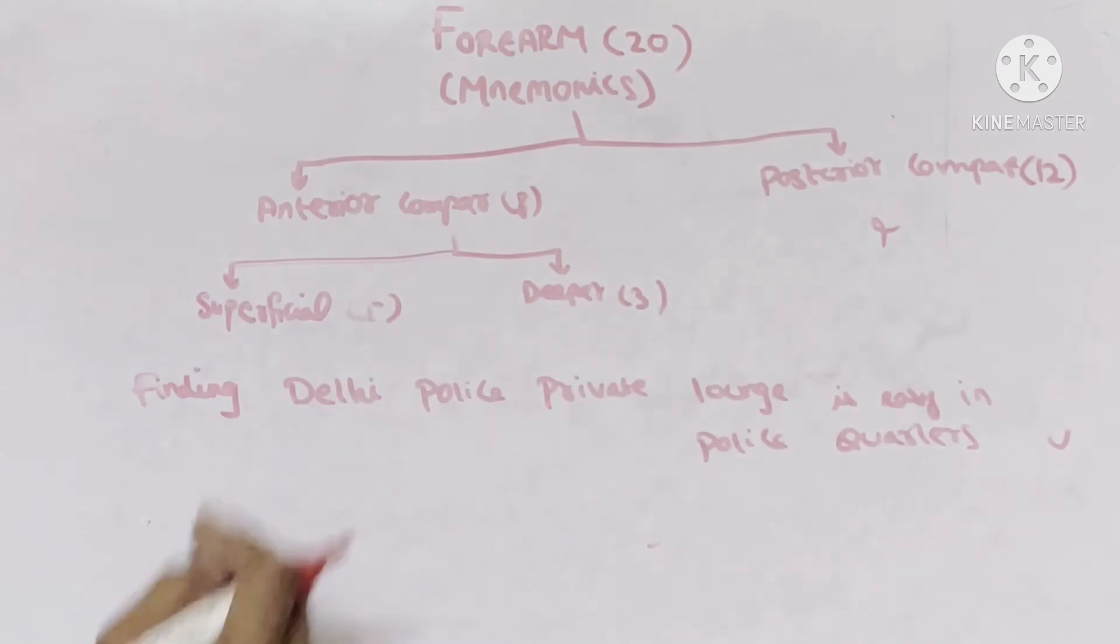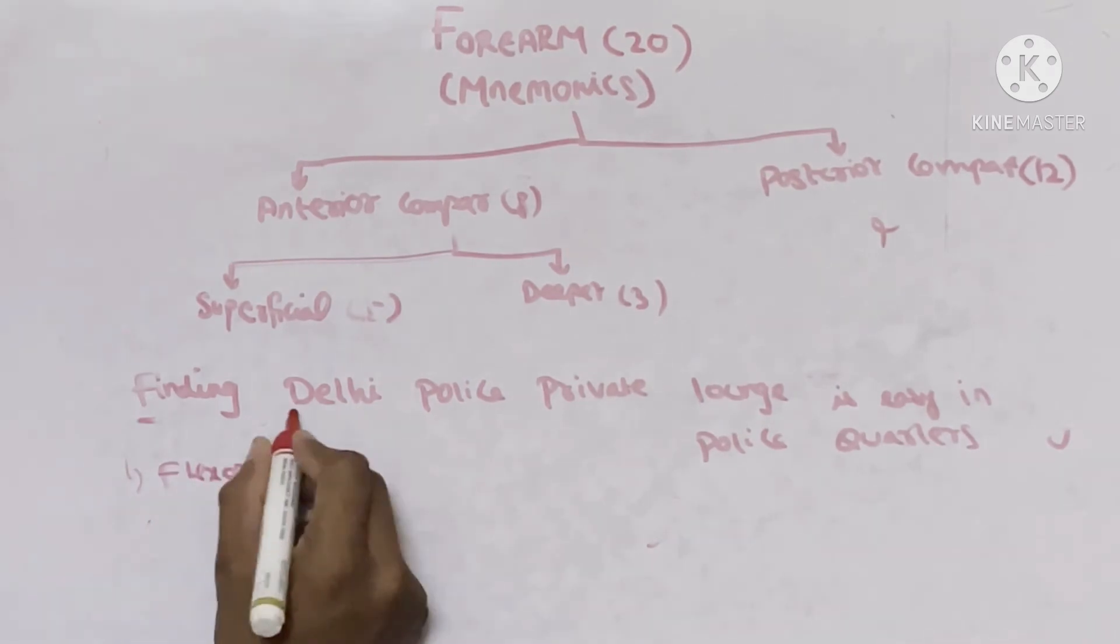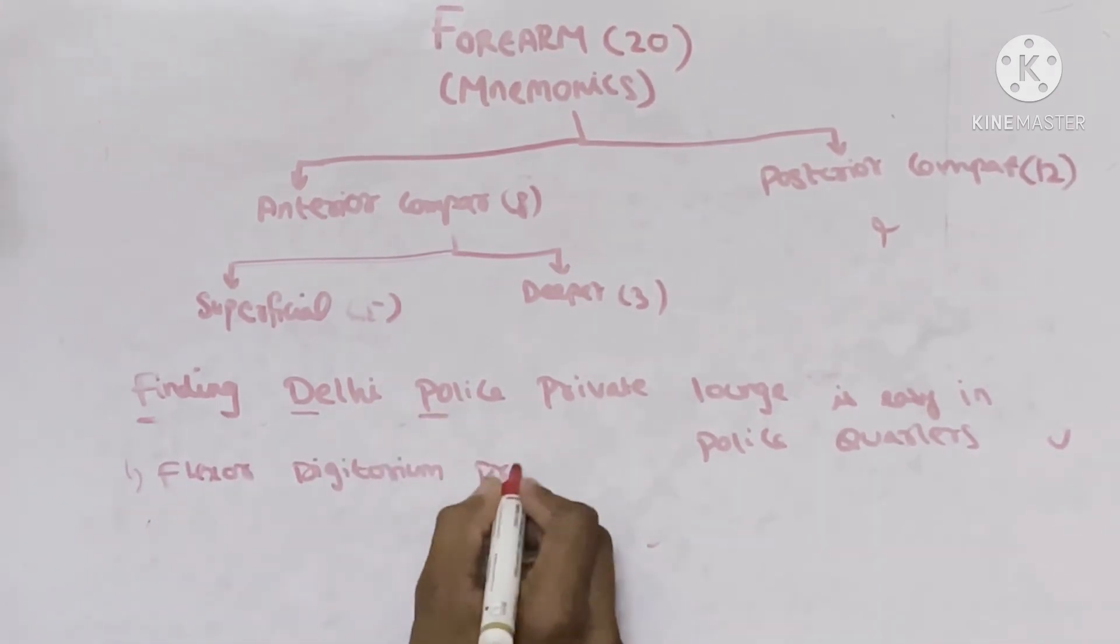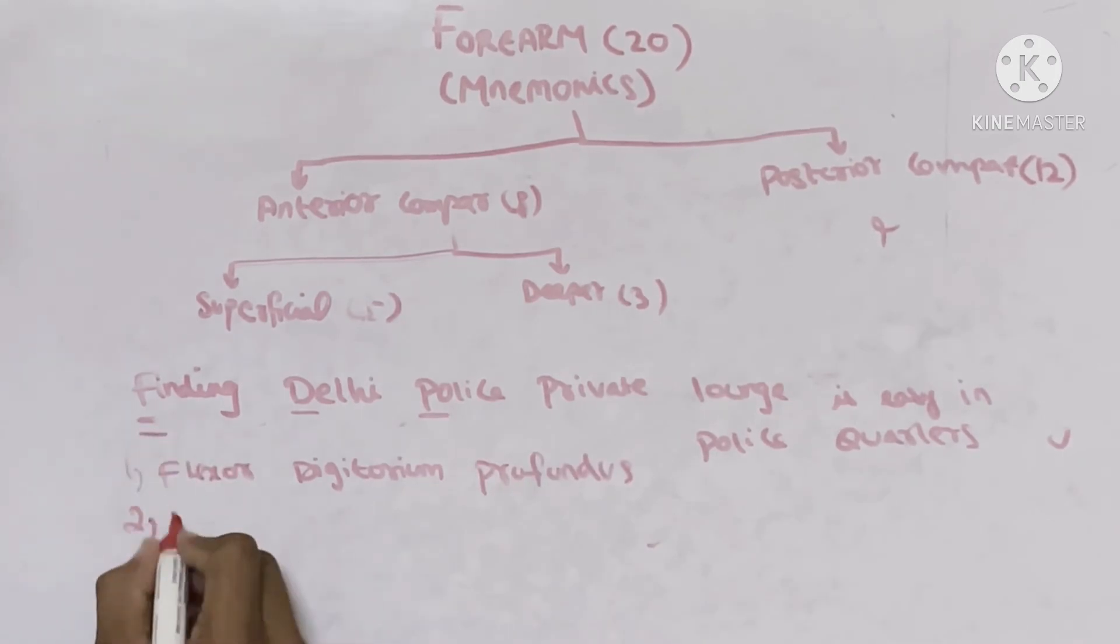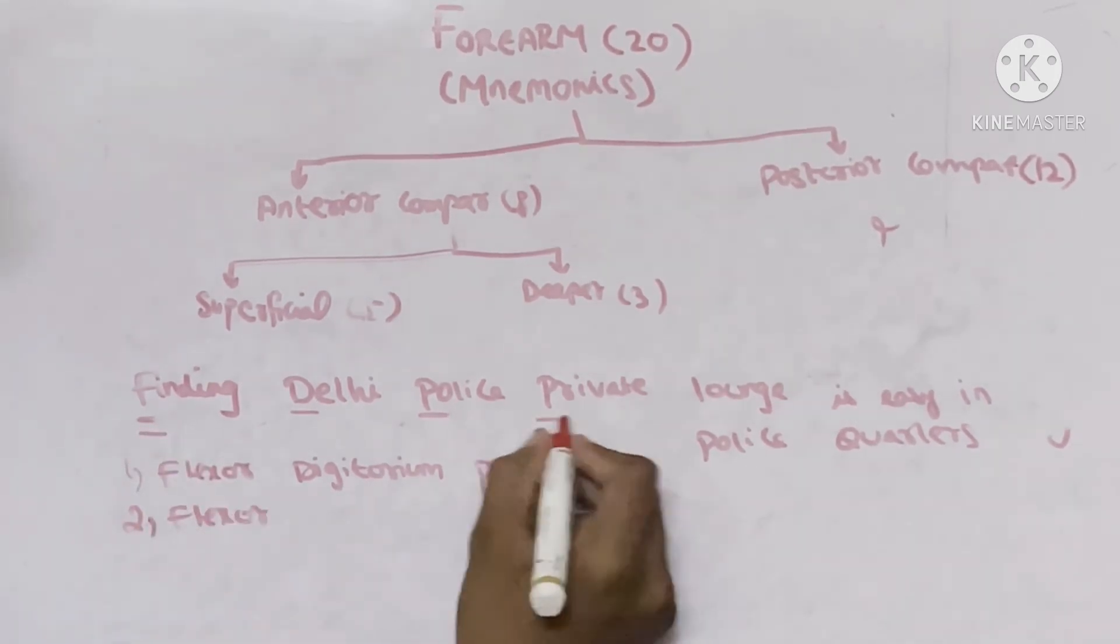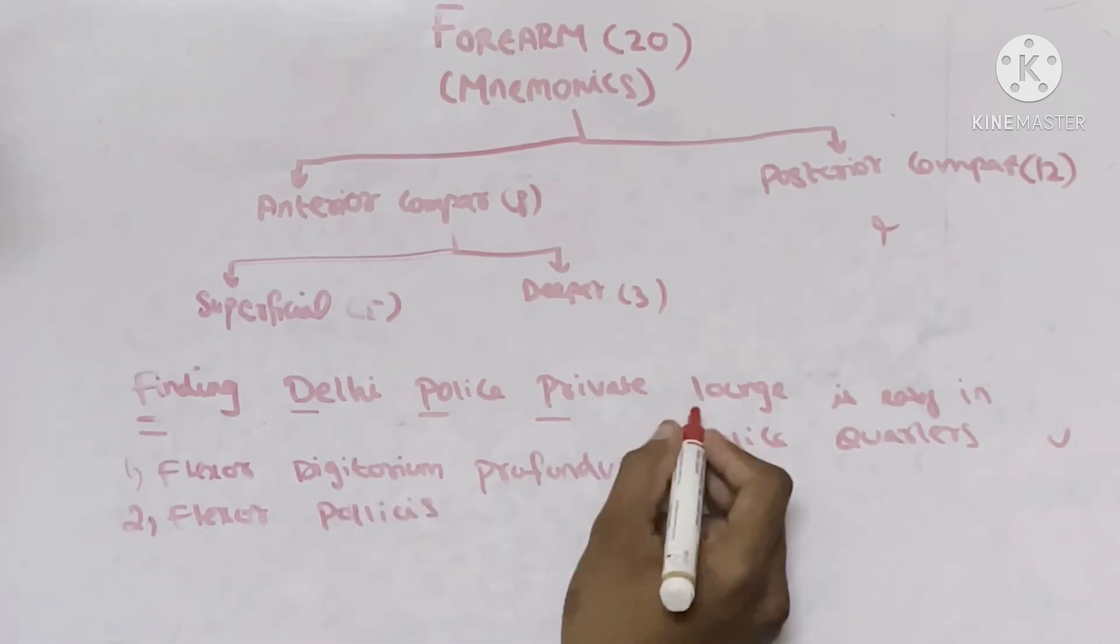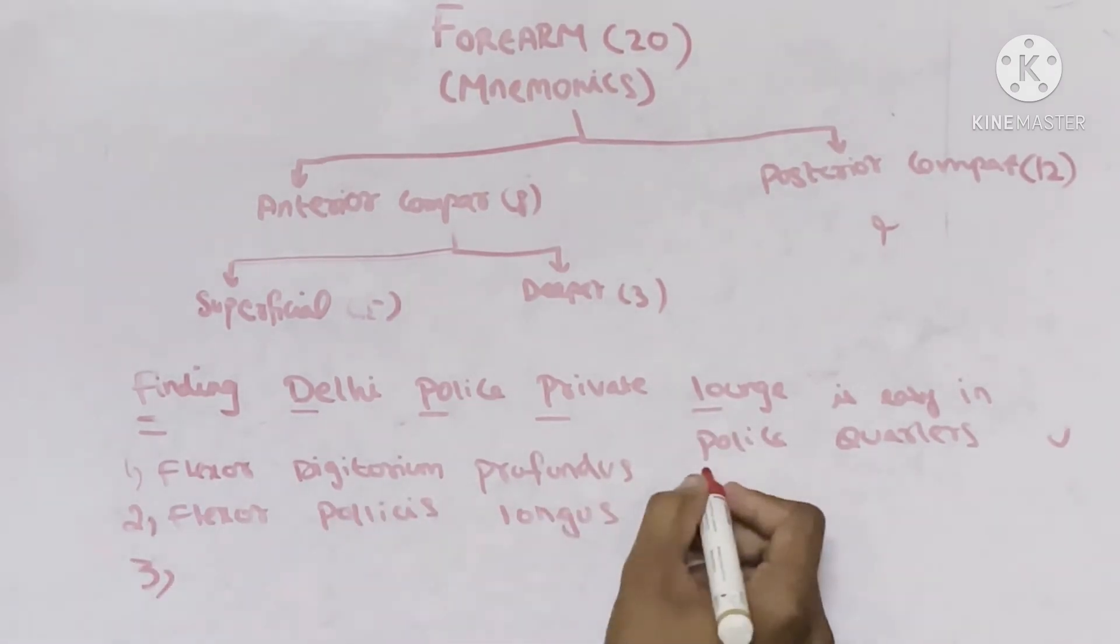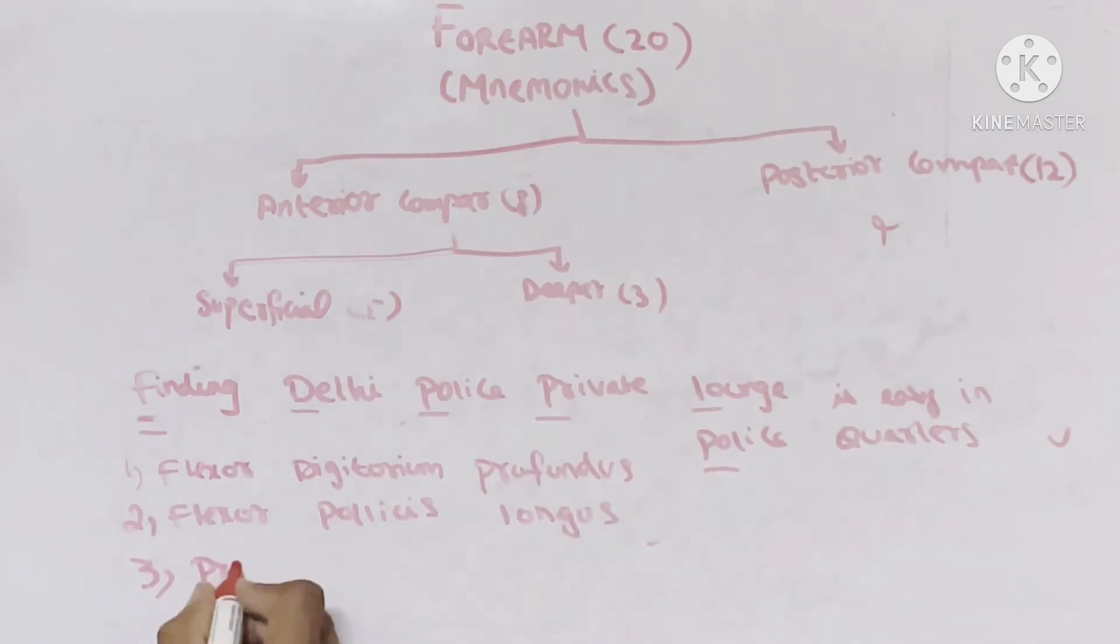So this simple statement gives us all the muscles of deeper layer of anterior compartment. The first muscle is F stands for flexor, D stands for digitorum, P stands for profundus. Second muscle is again F stands for flexor, P stands for pollicis, L stands for longus. The final muscle is P stands for pronator, Q stands for quadratus.